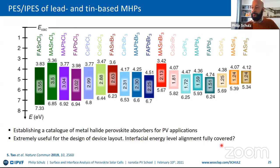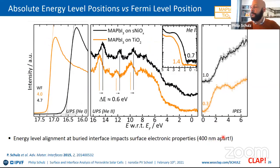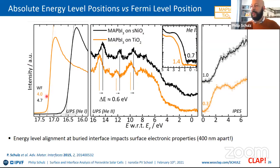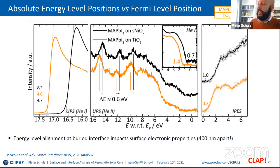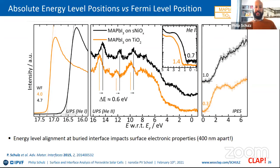Is the interfacial energy level alignment fully covered by surface measurements alone? Now we look at a first interface-related observation: the same material MAPbI3, deposited either on titanium oxide (orange) or on nickel oxide (black). All structural and morphological properties are the same, but the work function of MAPbI3 on TiO2 is 4.0 eV, while on NiO it is 4.7 eV. A similar shift is seen in core levels, valence band onset, and conduction band onset. Question for the audience: what is the ionization energy of the MAPbI3 film on TiO2, and on NiO?